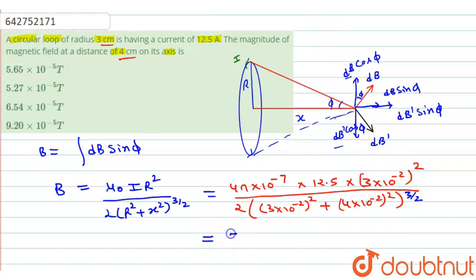After simplification, we will get 5.65 into 10 to the power minus 5 tesla. So option A is correct.